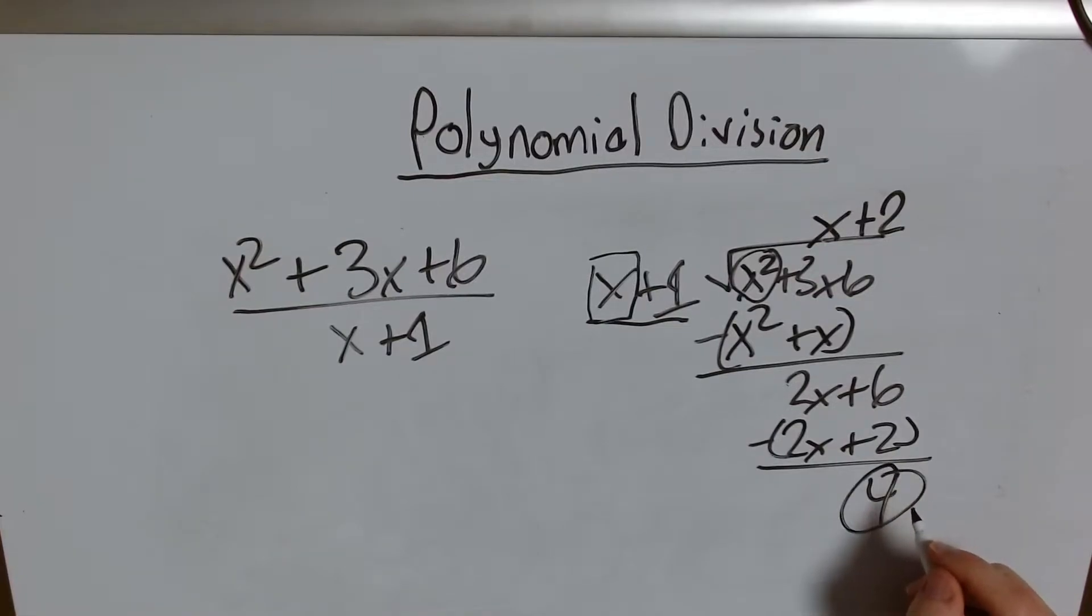We call these remainders. When we can't fully divide out a term be it a single number or an algebraic expression we call those remainders. We can't fully get rid of them. They're what's left over. They're what's remained. Hence we call them remainders.